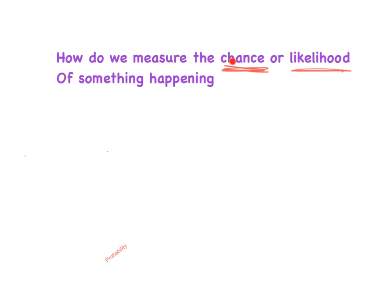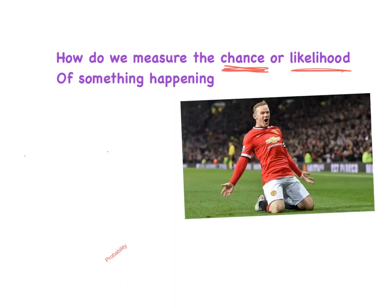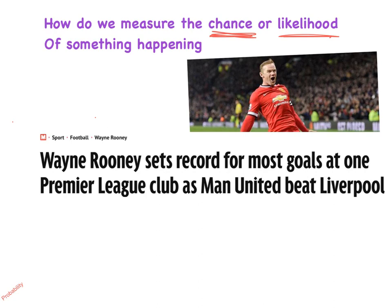So the first thing I'm going to ask is: how do we measure the chance or the likelihood of something happening? If I was to ask the question, what is the chance of Wayne Rooney scoring this weekend? A lot of things will come into my head, but first of all I would probably think of his latest score record. Here is a headline from this weekend's Mirror: Wayne Rooney sets the record for the most goals scored at one Premier League club as Manchester United beat Liverpool. So he's after beating the record, he's doing really well at Manchester United, so I'd say the chances of him scoring this weekend would be pretty likely. What I'm actually doing there is I am using probability.